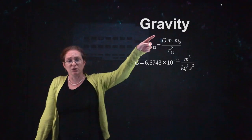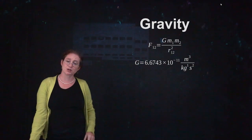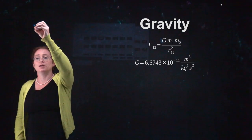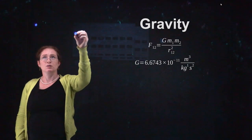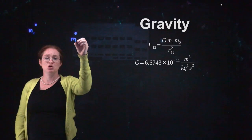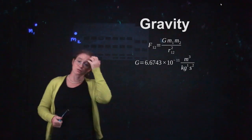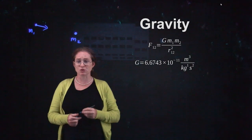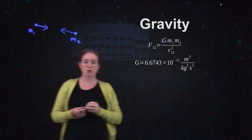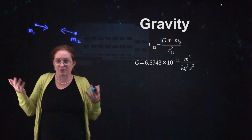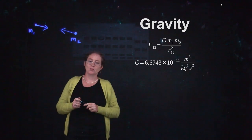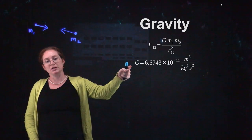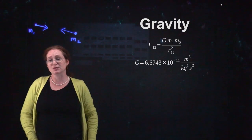Here you can see the general equation — this is for the magnitude of the force, not the direction. What Newton's law of gravity says is that if you have any two masses, m1 and m2, there will be a force of gravitation between them attracting them, so there is a force on m1 pulling it towards m2, as well as a force on m2 pulling it towards m1. The forces are equal and opposite. The gravitational constant G — capital G — is about 6 times 10 to the negative 11.